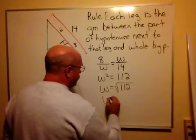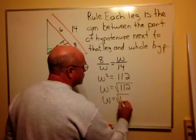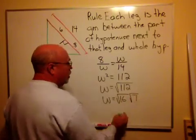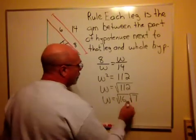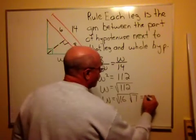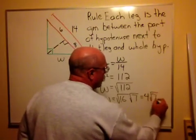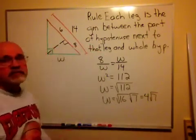So W is the square root of 16 times the square root of 7, because 7 times 16 also is 112. I can replace the 16 with a 4. In simplest form, 4 root 7 is the value of W.